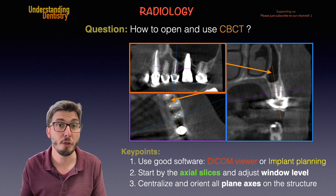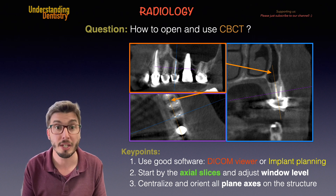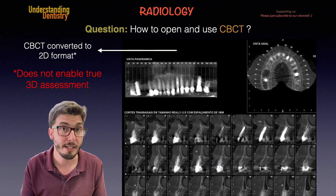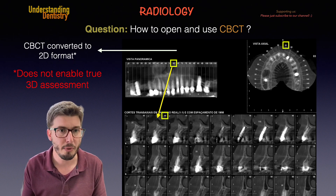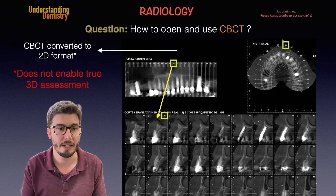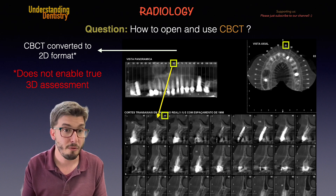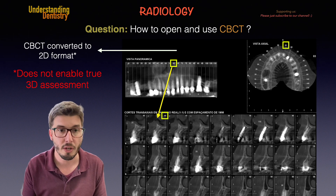Several dentists still prefer to assess everything on 2D files, like JPG images. If you don't want to use your software to navigate through the images, you will probably receive a CBCT converted to the 2D format. We need to understand the numbers on the row — for example, number 60 is a cross-sectional slice of the left upper central incisor. All you need to do is find cross-sectional slice number 60 and evaluate the buccal-lingual dimensions of that area.